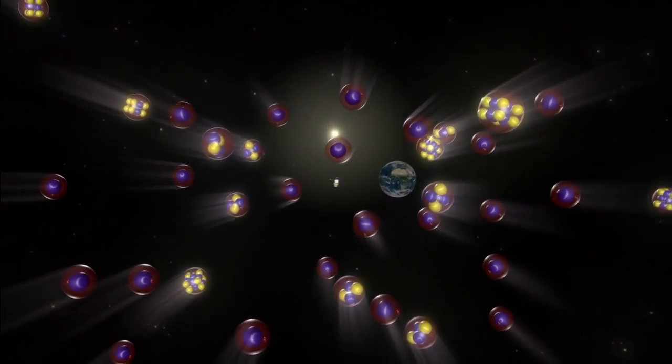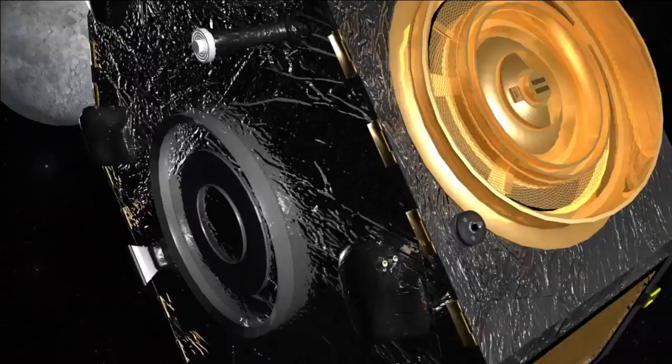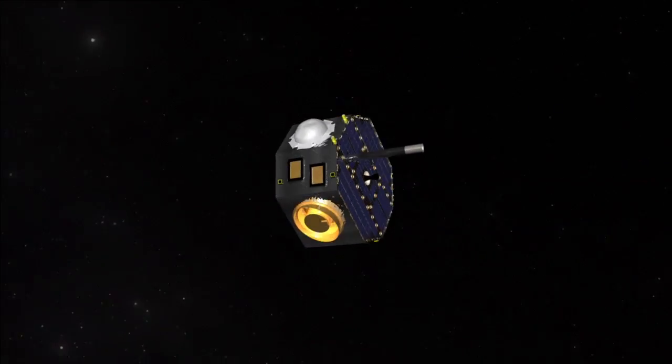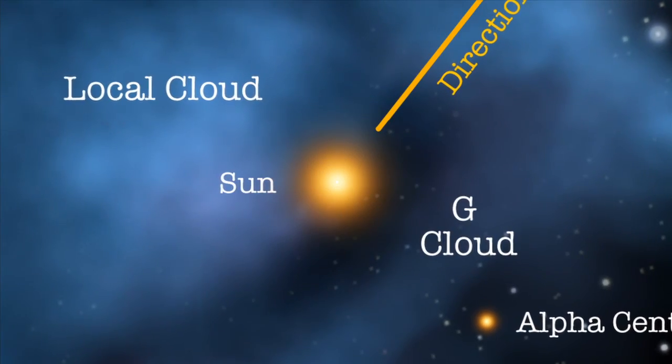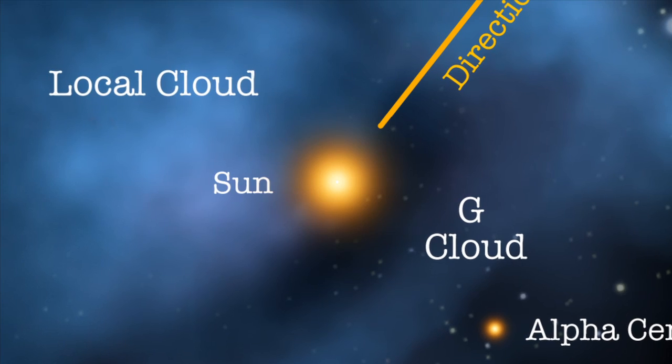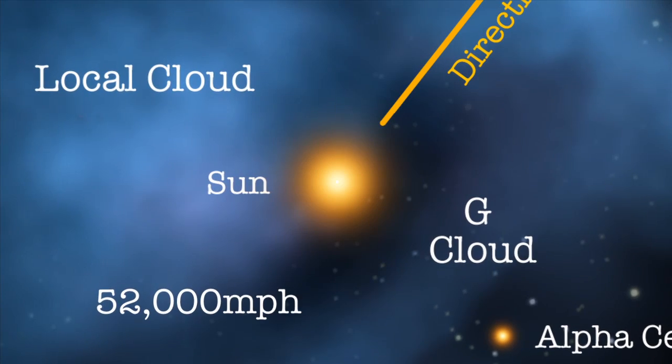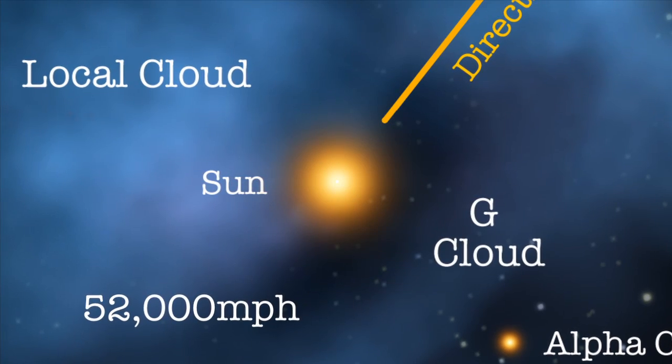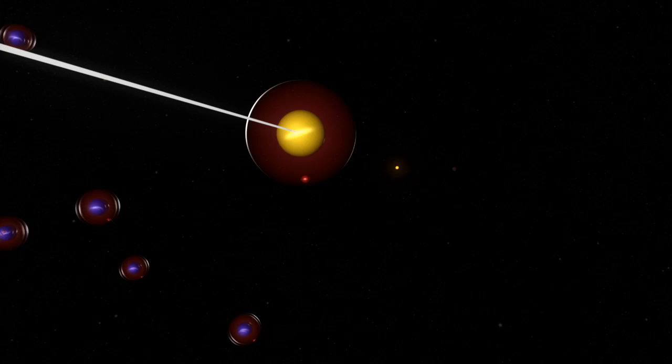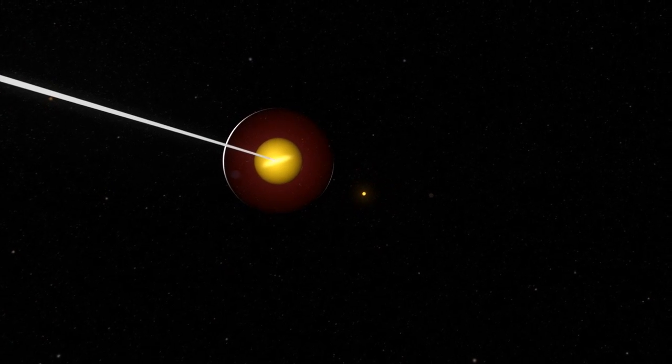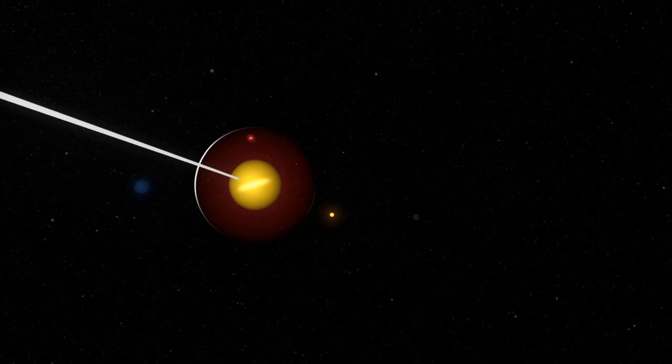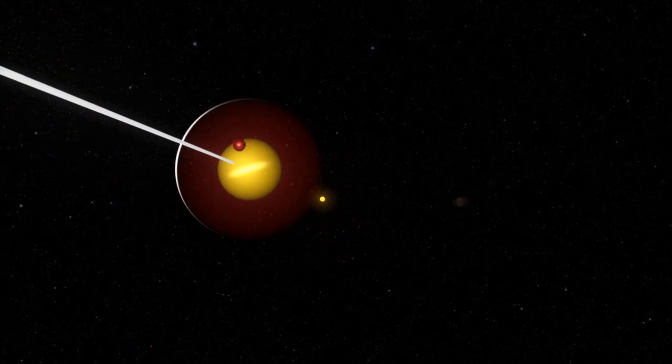The measurement of these atoms by IBEX has enabled scientists to get a better grasp on the environment around our solar system. The speed of the galactic wind registered around 52,000 miles per hour, which is about 12% slower than previously thought. At that speed, it still takes about 30 years for each atom to reach IBEX from the edge of the solar system.